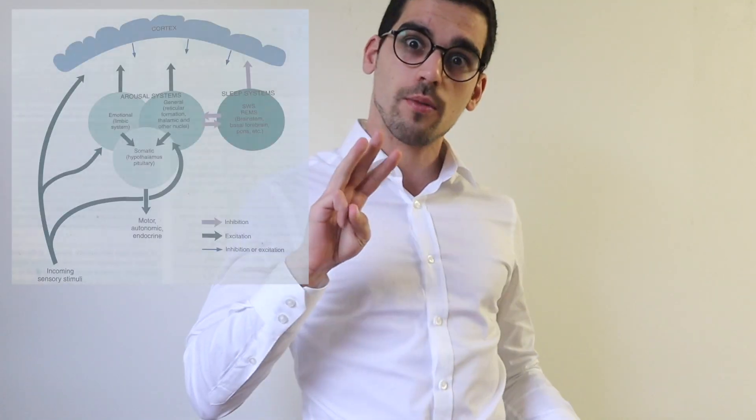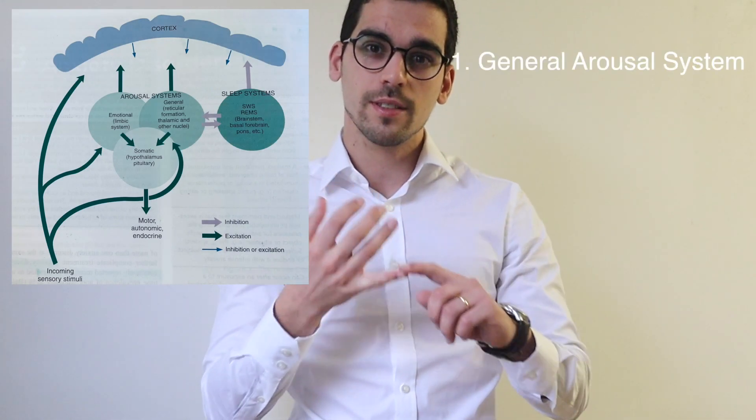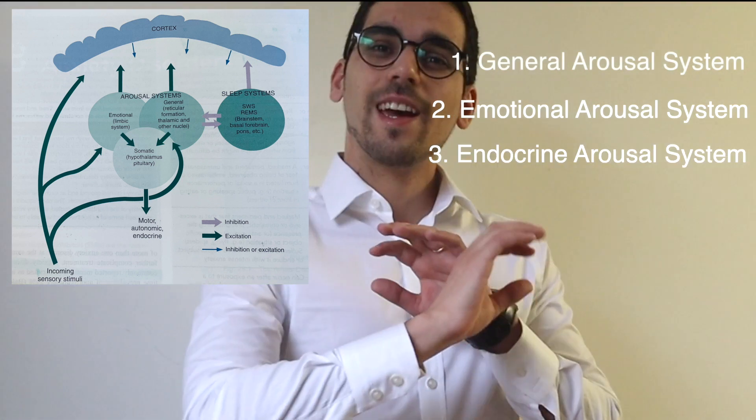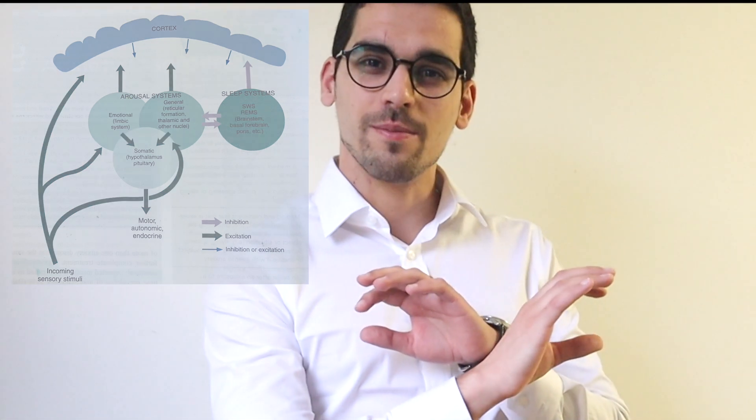In order to fully understand anxiety it's really important to look into its pathophysiology. In a very simplistic and brief way, there are three main arousal systems: there is the general arousal system, there is the emotional arousal system, and there is the endocrine arousal system.